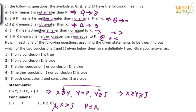Look at the second conclusion: P less than or equal to X. We know that Y is less than or equal to X from the first statement. Y less than or equal to X, and P is equal to Y. So if P is equal to Y, Y can be replaced with P — so Y less than or equal to X means P is less than or equal to X. So the second conclusion is true. Your answer should be only conclusion 2 is true — option 2.